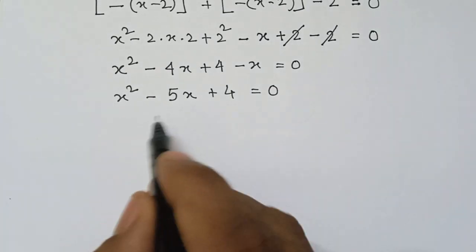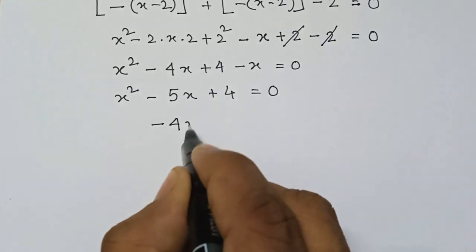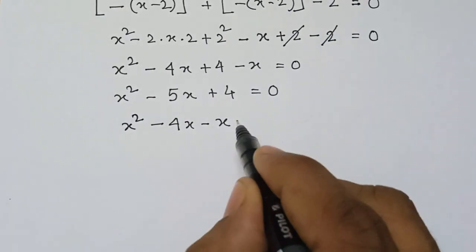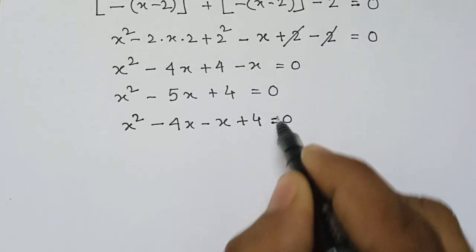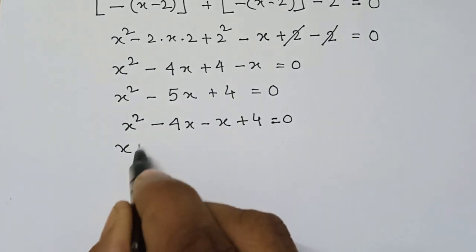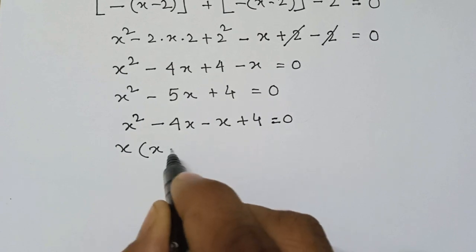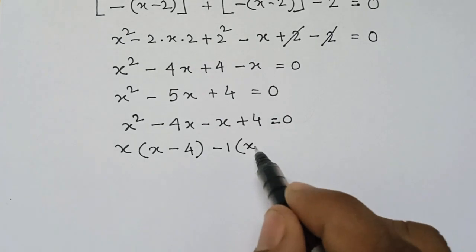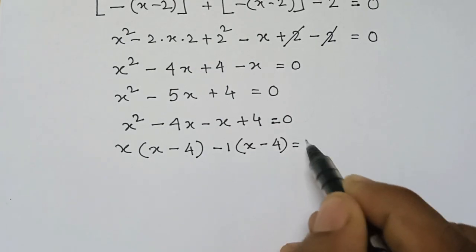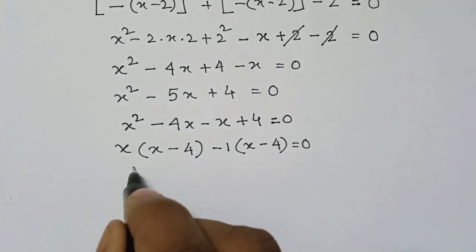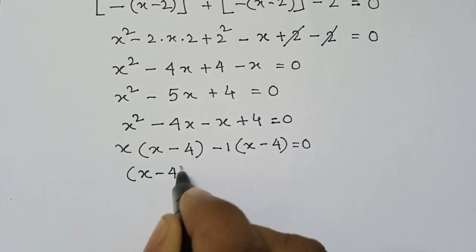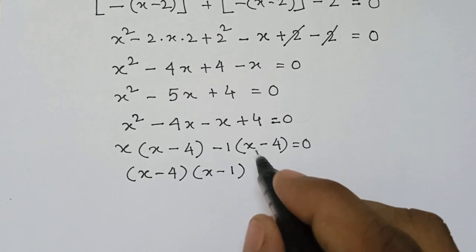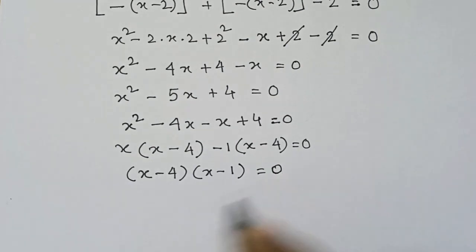Now we can write minus 5x as minus 4x minus x. We can take x common from the first two terms, giving x(x minus 4), and from the remaining terms we take 1 common, giving 1(x minus 4) equals 0. So taking (x minus 4) common, we get (x minus 4)(x minus 1) equals 0.